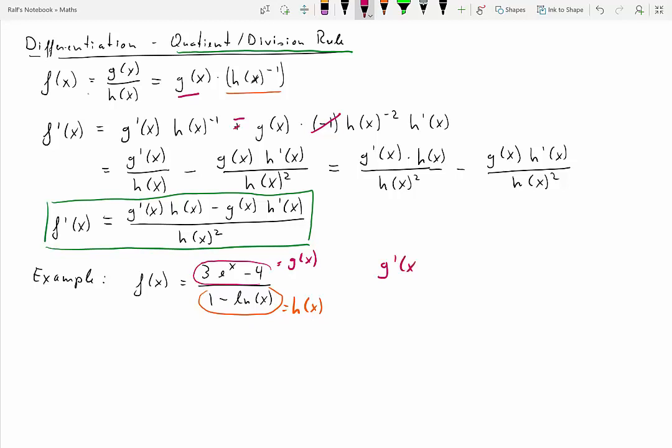So we know to get to the result, what we need is h prime of x and g prime of x. So let's first calculate g prime of x. And that is just 3 times e to the x minus 0, because that minus 4 will have a derivative of 0. Then h prime of x, that will be negative 1 over x. Okay, so basically we now have all the terms we need. We now just need to assemble the solution.